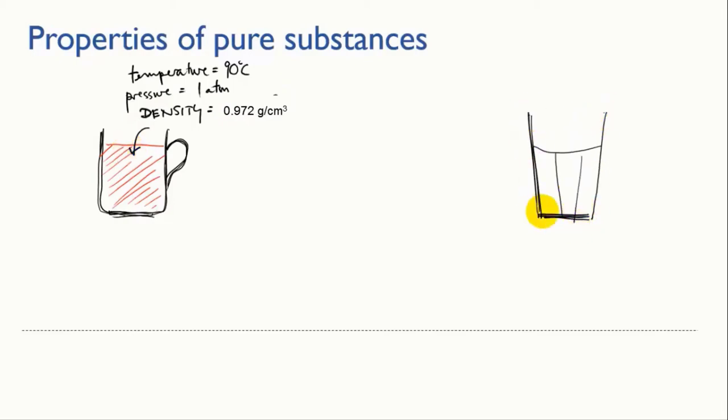If I now looked at a glass of iced water with a temperature of 4 degrees C straight from the fridge, and also at 1 atmosphere pressure, I'd find its density was 1 gram per centimeter cubed.